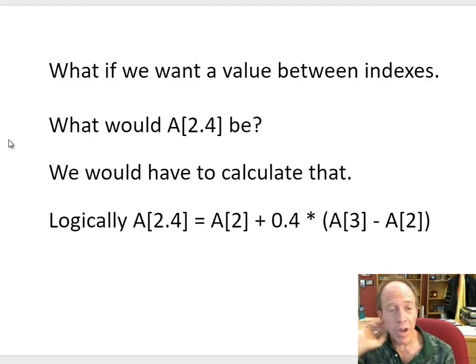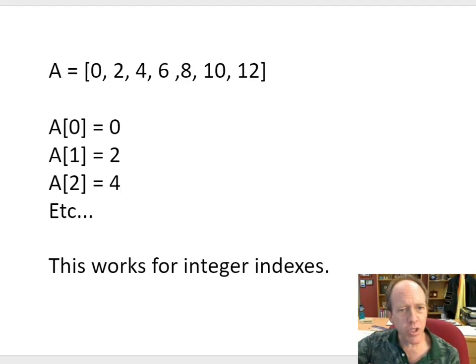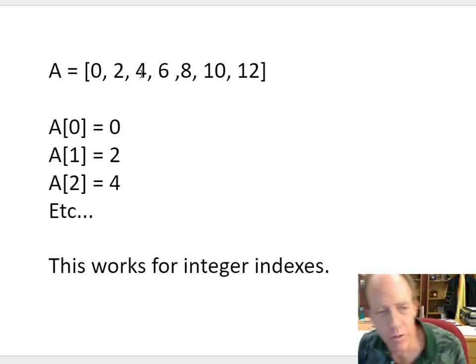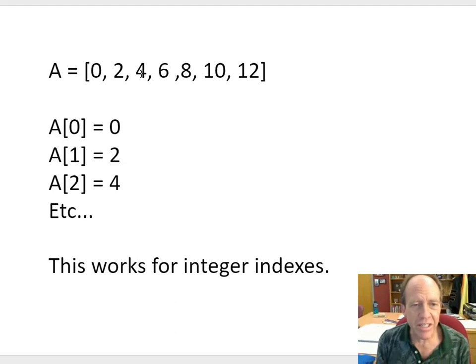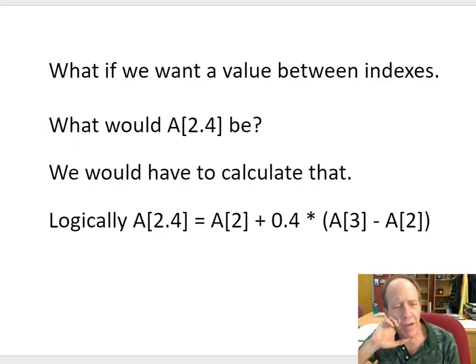What if we actually wanted to know what A of 2.4 was? Well, that's not an integer. We go back to that thing, A of 2.4, where there's A of 0, A of 1, A of 2. Hang on, how can we have that? A of 2 is 4 and A of 3 is 6. 2.4 is in between those two.